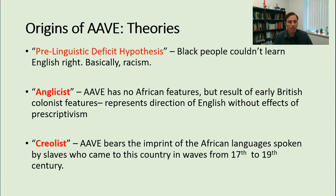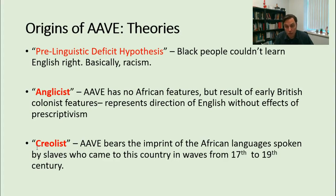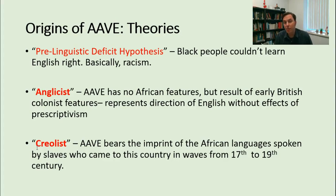The other is the Creolist theory — the belief that African American vernacular English bears the imprint of the African languages spoken by slaves who came to this country in waves from the 17th to the 19th century. Evidence for this includes the verb structure and verb system of Black English, which has complexities that standard English doesn't have, but which seem to share something with certain West African languages like Yoruba and Ashanti — which happened to be the regions from which enslaved people were taken during the colonial period in the United States.